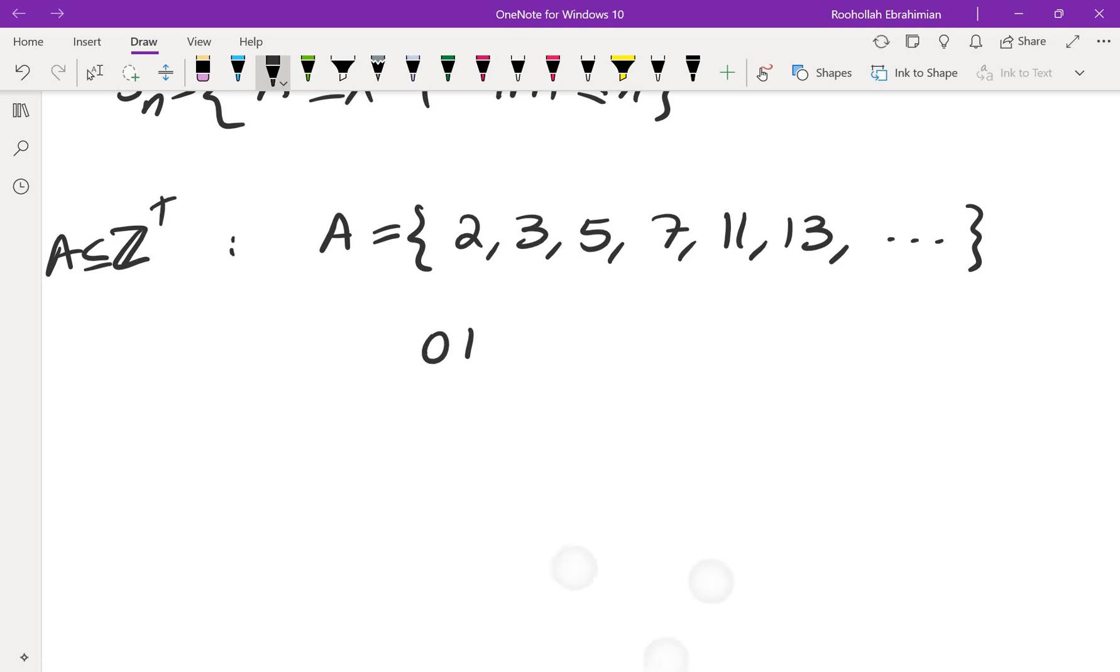So zero indicates that one is not in the set. One indicates that two is in the set. One indicates that three is in the set. Zero indicates that four is not in the set. One again indicates that five is in the set. Zero for six not in the set. One for seven is in the set. Eight and nine and ten are not in the set. We have eleven in the set. Twelve is not. Thirteen is in the set, and so on.